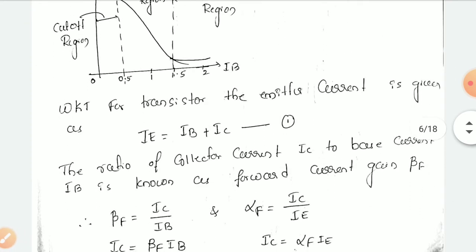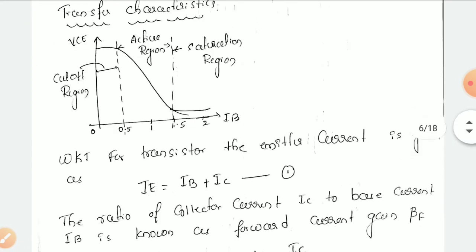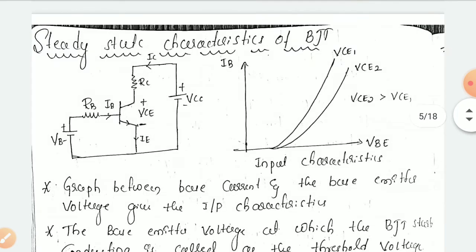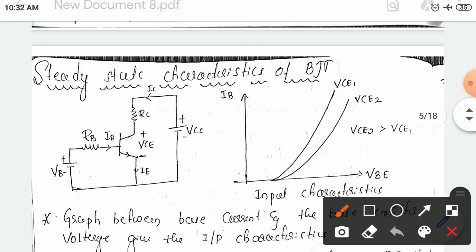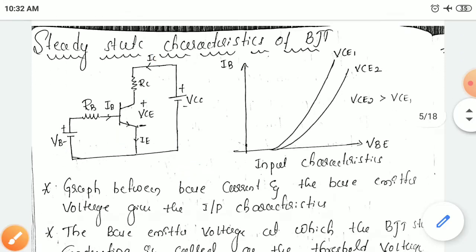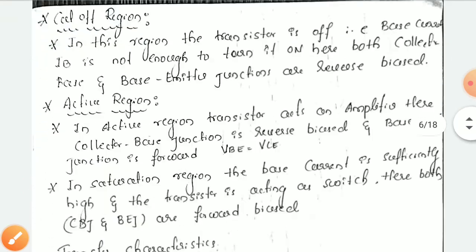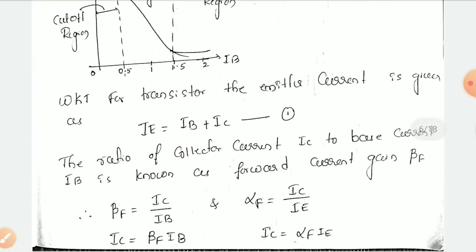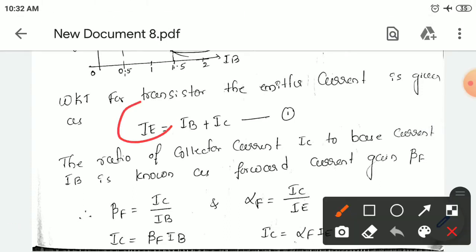For the transistor, the emitter current IE is equal to the current flowing through the emitter — it is a sum of the collector current and the base current. IE is equal to base current plus collector current.